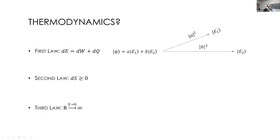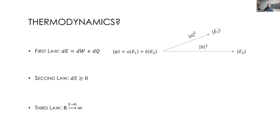The second law clearly cannot apply to the system being measured, because you start with some finite entropy and post-measurement there is zero entropy — so clearly you reduce the entropy of the system being measured. That may be fine as it's not a closed system. You can postulate that the entropy increase of the measurement apparatus must at least compensate for the entropy decrease in the system being measured, but again this is not from first principles.